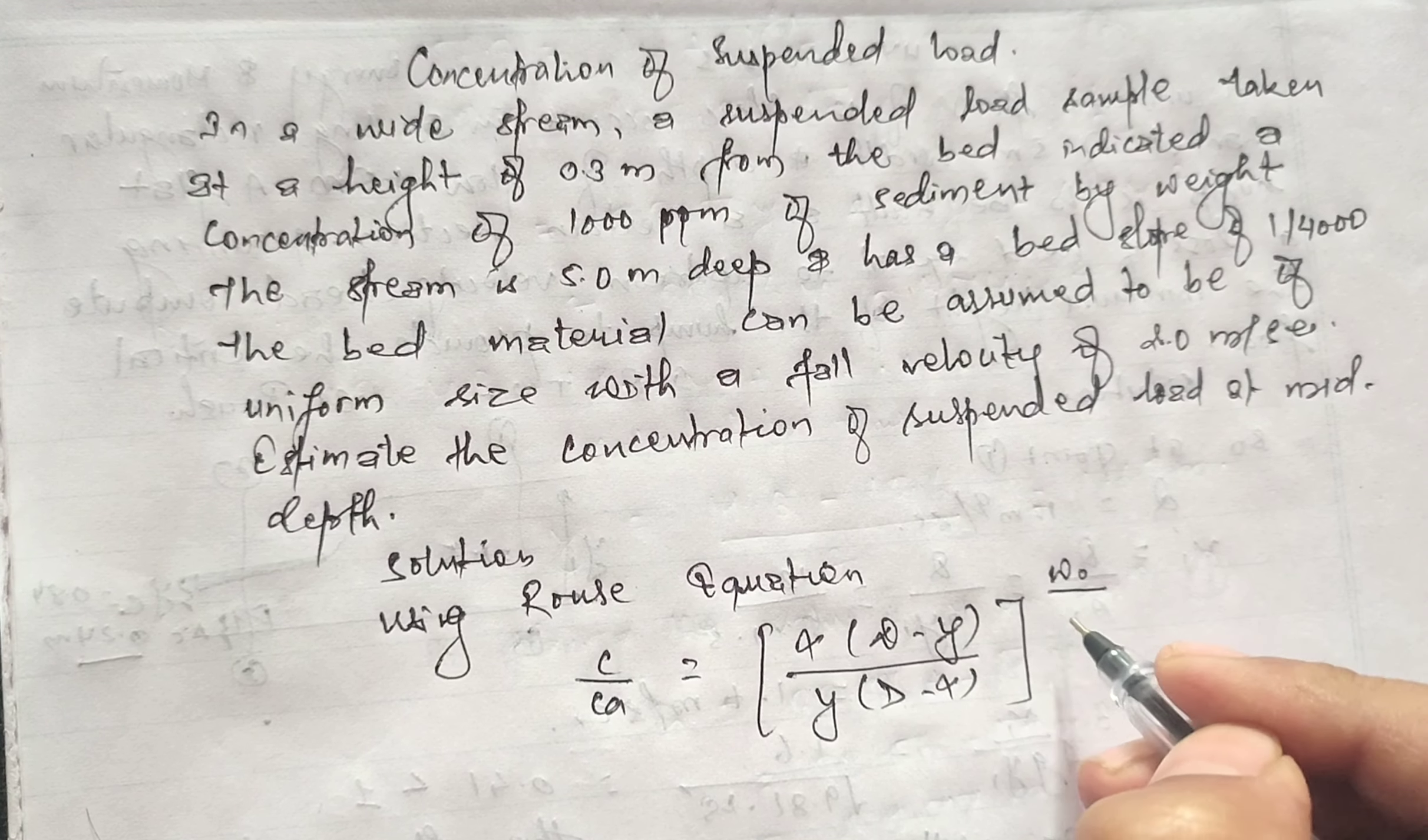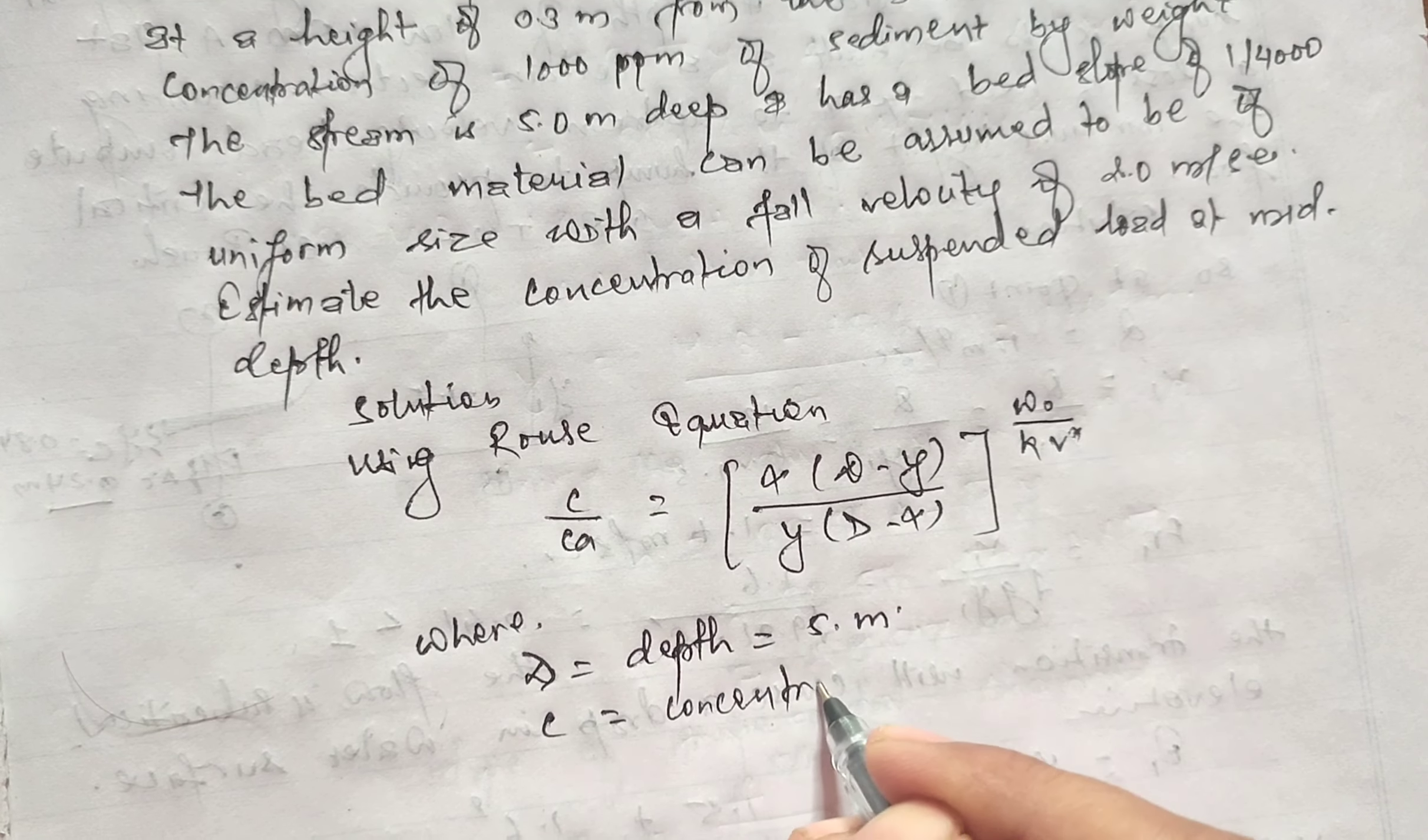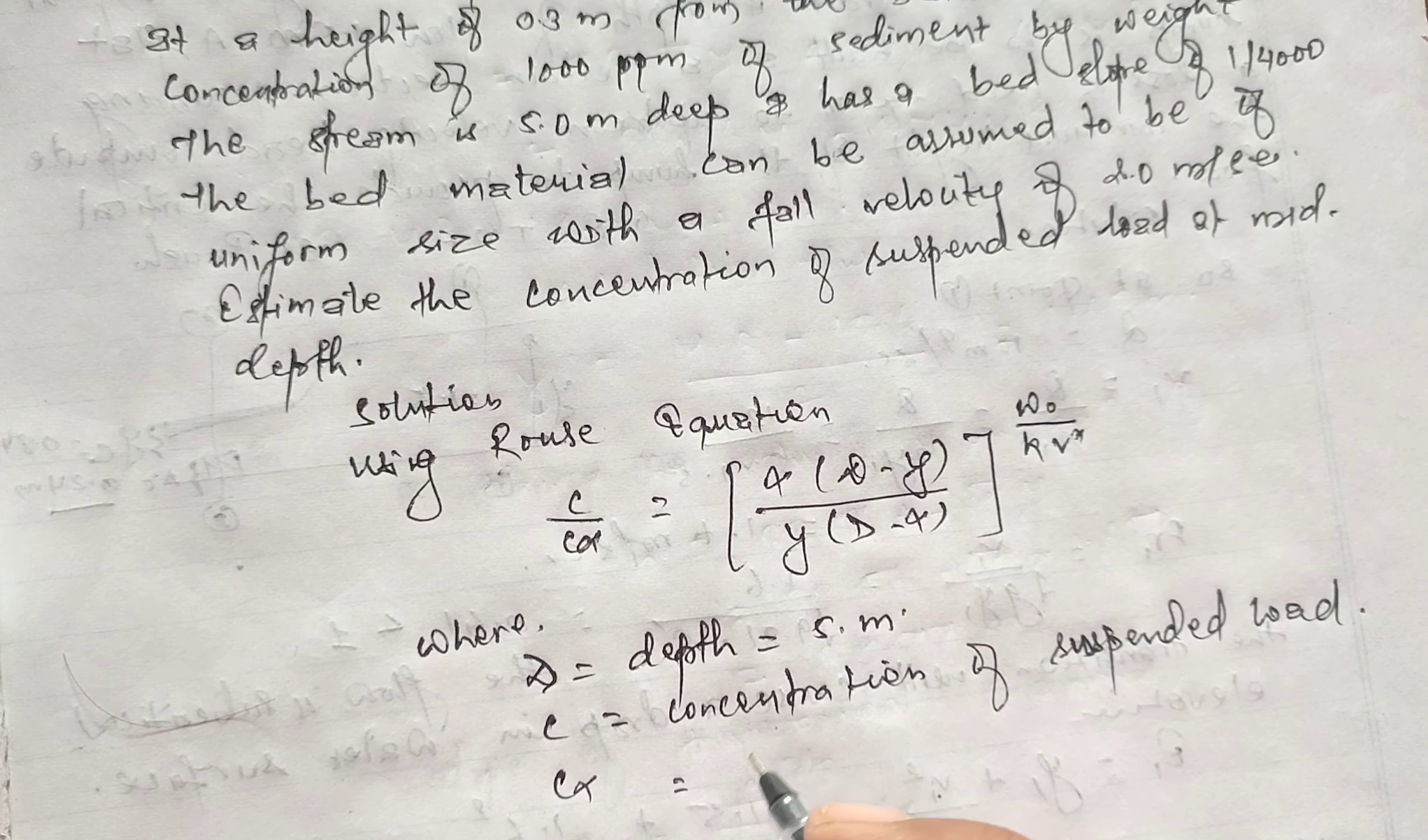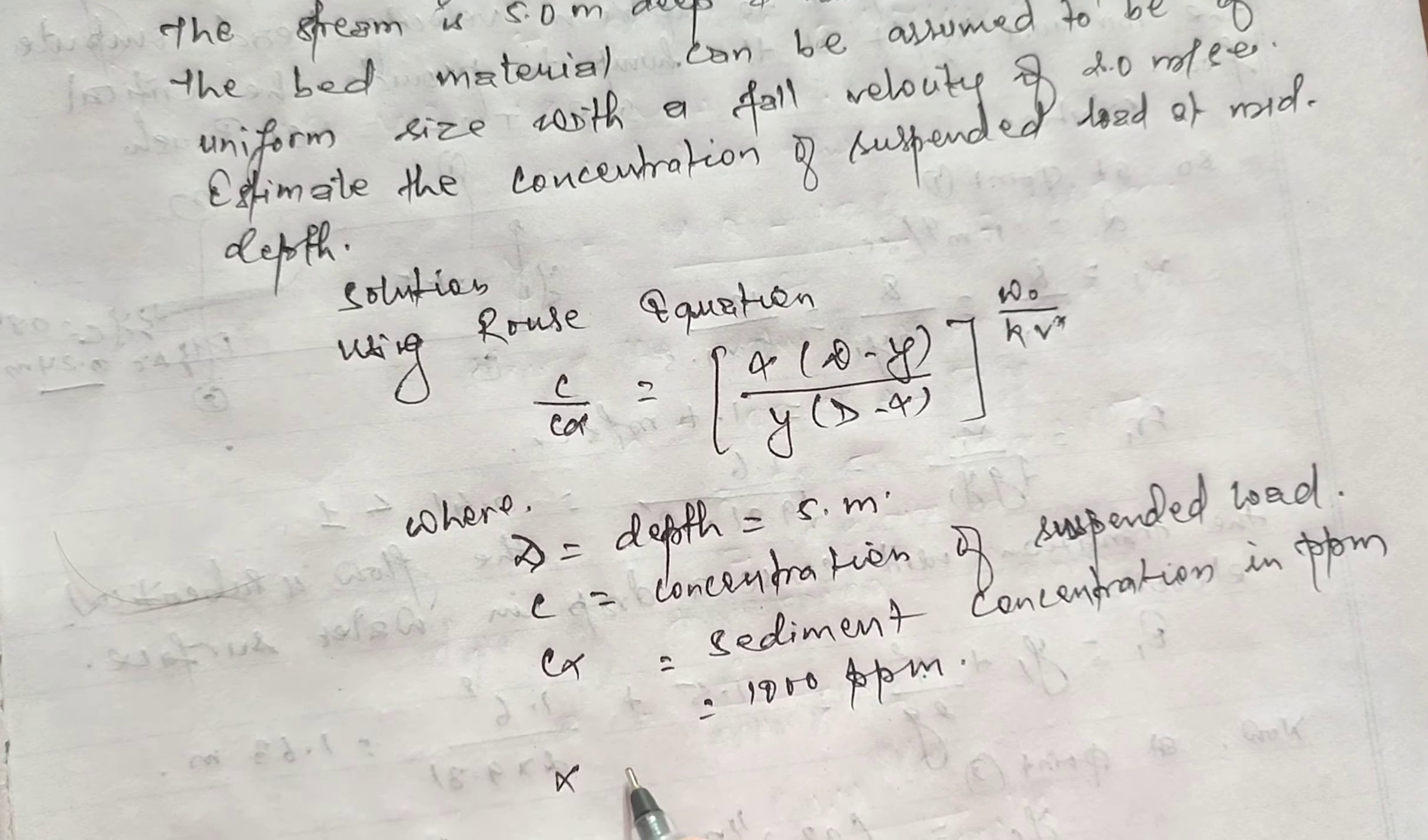Where d equals depth equals 5 meter given. c is the concentration of suspended load. c_α equals sediment concentration in ppm, that is given as 1000.